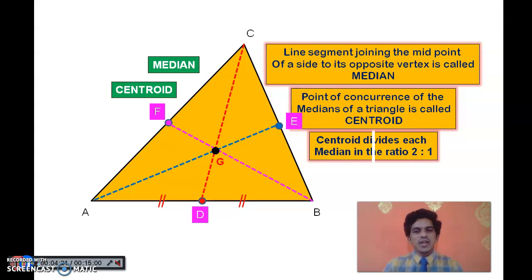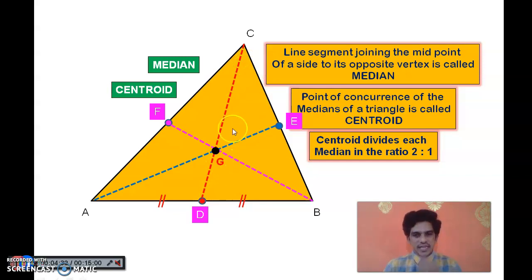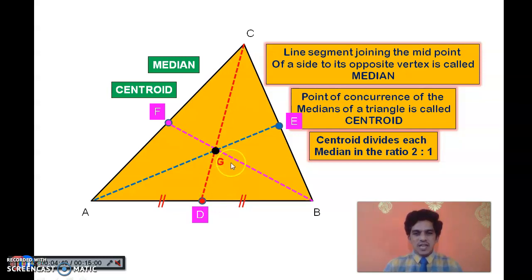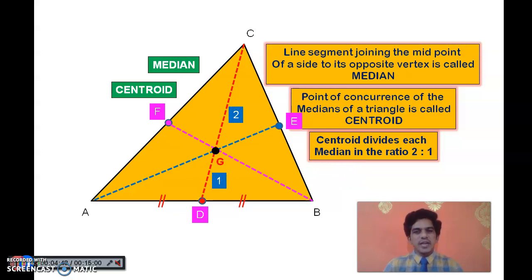The important thing to observe is that the centroid actually divides each median in the ratio 2:1. For example, in median CD, the distance from C to G is double that of G to D. If GD is 1 part, CG will be 2. This is the important property of the centroid: it divides each median in the ratio 2:1.